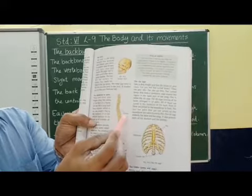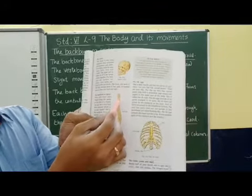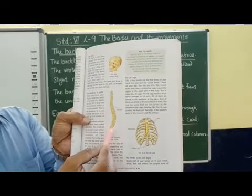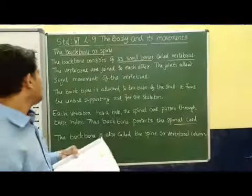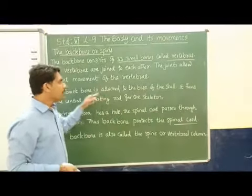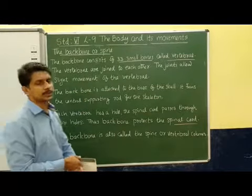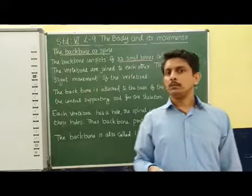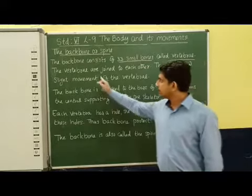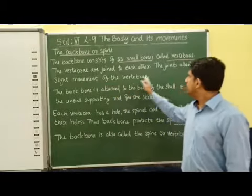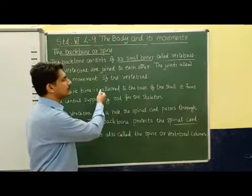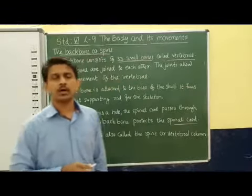Each bone we can call a vertebra. This is the way the backbone consists of a group of 33 small bones. These vertebrae are joined with each other, so each of these small bones are joined with each other. Because of this movement of the vertebrae, we are able to bend or twist our back.